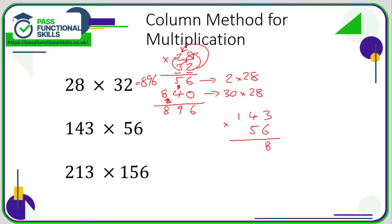6 times 3 is 18 — 8 carry 1. 6 times 4 is 24, plus 1 is 25 — carry the 2. 6 times 1 is 6, plus 2 is 8. Now I'm going to repeat the process with the 5, but first put in a zero because this is the 5 of 50. 5 times 3 is 15 — 5 carry 1. 5 times 4 is 20, plus 1 is 21 — 1 carry 2. 5 times 1 is 5, plus 2 is 7. It often happens that the second line is longer — of course it is, because you put in a zero.